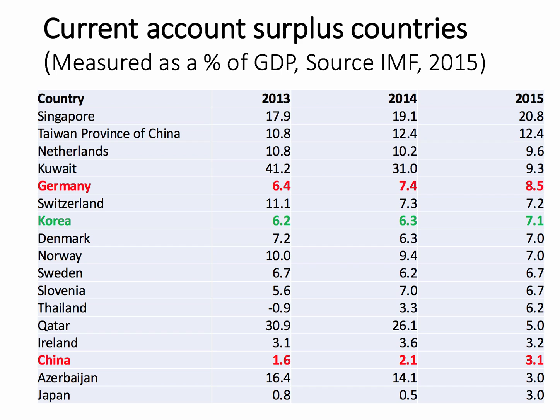Keep in mind that the current account is the balance of trade in goods and services, net primary income from investment services and also net secondary income. This table is really quite interesting because it highlights some of the most successful countries in the world in economic terms.